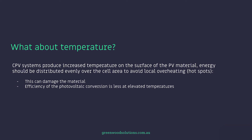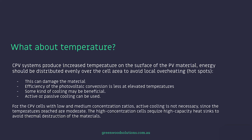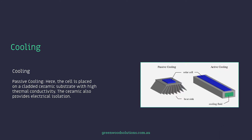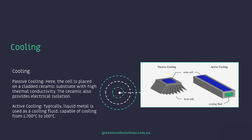The efficiency of PV conversion is less at elevated temperatures, so some kind of cooling may be beneficial. This can take the form of active or passive cooling. For CPV cells with low and medium concentration ratios, active cooling is not necessary since the temperatures reached are moderate. High concentration cells require high-capacity heat sinks to avoid thermal destruction of the materials. With passive cooling, the cell is placed on a cladded ceramic substrate with high thermal conductivity, which also provides electrical isolation — it wicks away the heat passively. With active cooling, typically a liquid metal is used as a cooling fluid, capable of cooling from 1700 degrees centigrade down to 100 degrees centigrade.